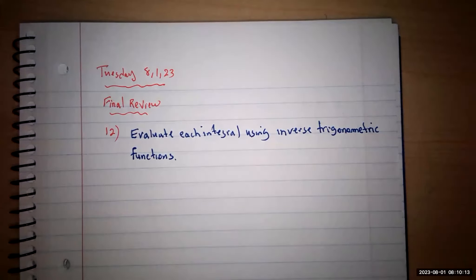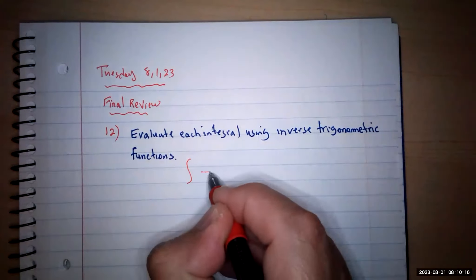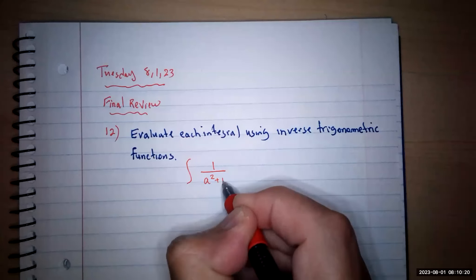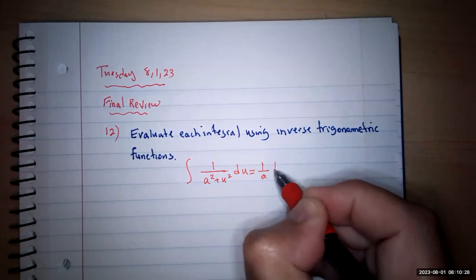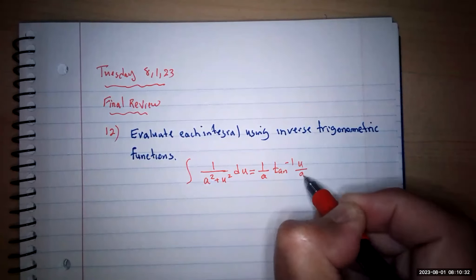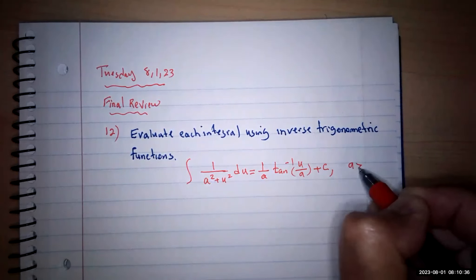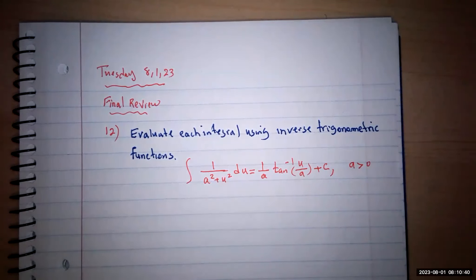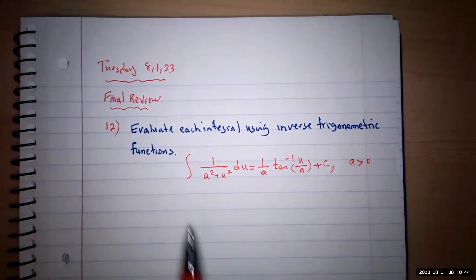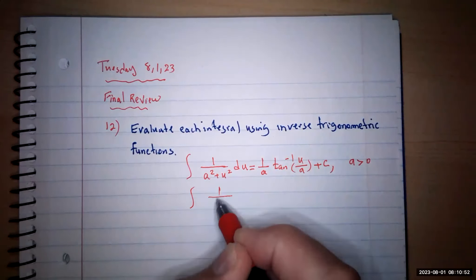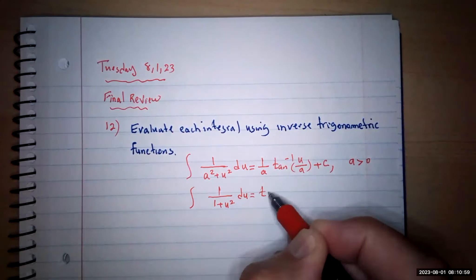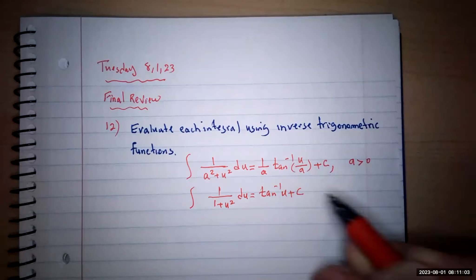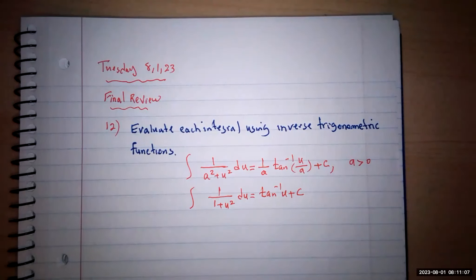For this group, you need only one formula: the integral of 1/(a² + u²) du equals (1/a)·tan⁻¹(u/a) + C. When you have a², you take the positive square root to find a. If a equals 1, it's straightforward and becomes tan⁻¹(u) + C. There are only two cases and you should be able to do it right away.